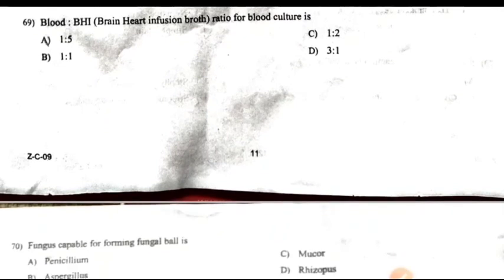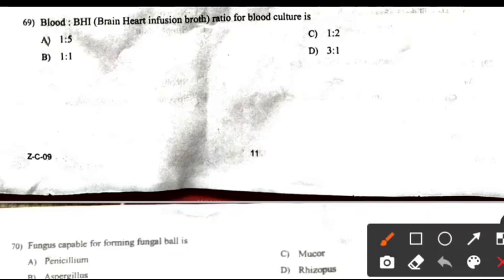Blood to brain-heart infusion growth ratio for blood culture is: Right answer A: 1 to 5.